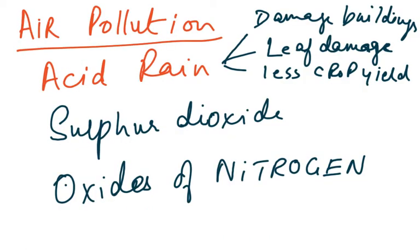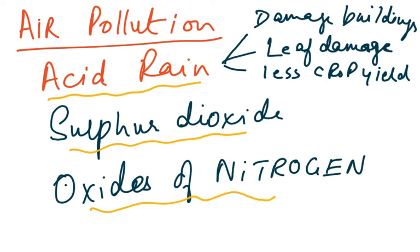Looking at air pollution, we discussed greenhouse gases, but there is also another component: air pollution by acidic gases — sulfur dioxide and oxides of nitrogen — contributing to acid rain. Acid rain forms because SO₂ and oxides of nitrogen dissolve in water in the air, forming sulfuric acid and nitric acid, causing immense damage to buildings and leaves, and reducing crop yield.